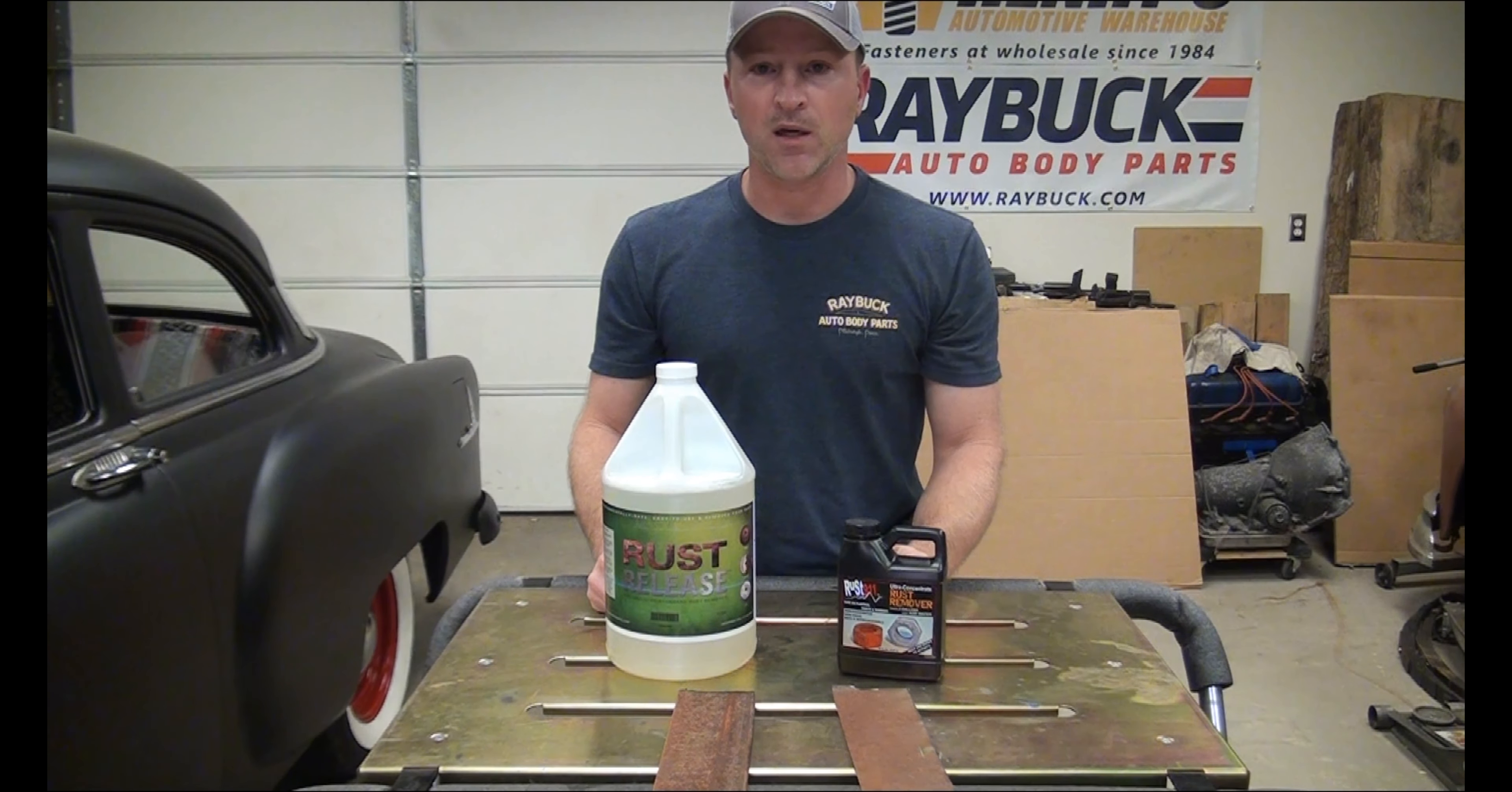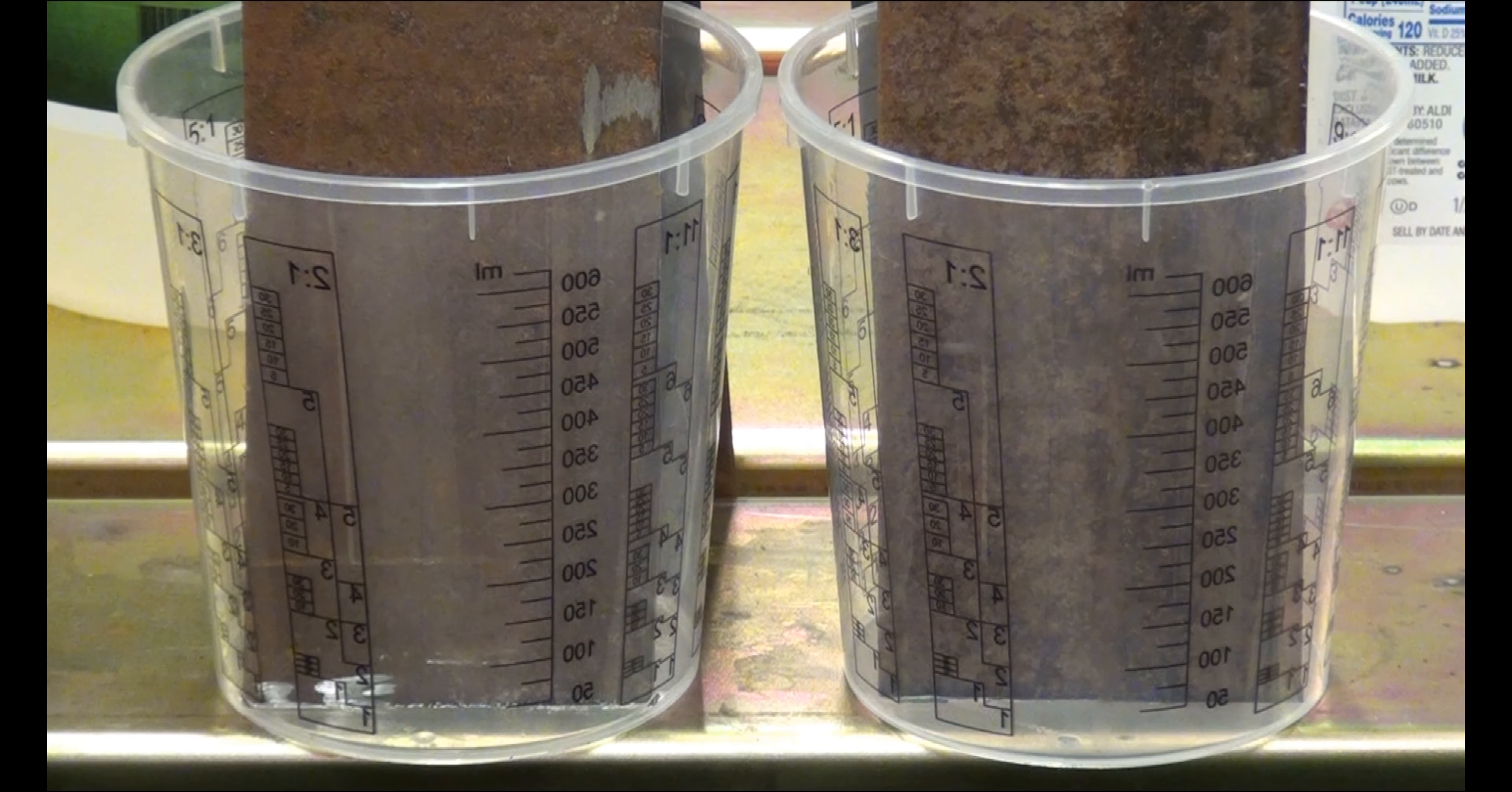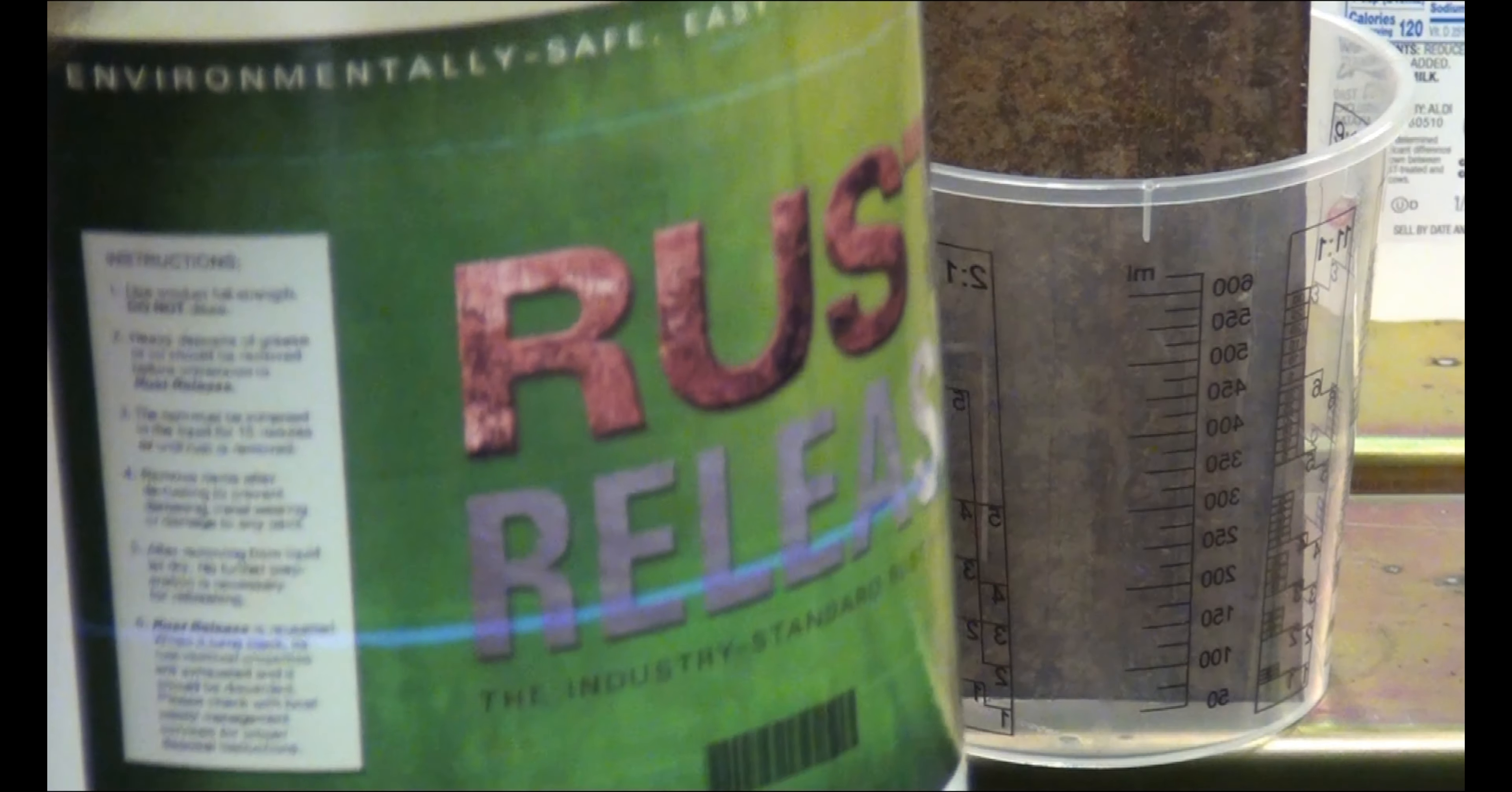I have my two pieces of rusted metal sitting in different containers. I'm going to fill this one with Rust Release and this one with the Rust 911 solution. I mixed four ounces of that with a half gallon of water, so that should be the correct measurement. One thing stated in the instructions that I didn't mention: the Rust 911 product will not activate until it's mixed with water, so you can't use it as a concentrate. Here's the Rust Release—we're going to put this one in this first container.